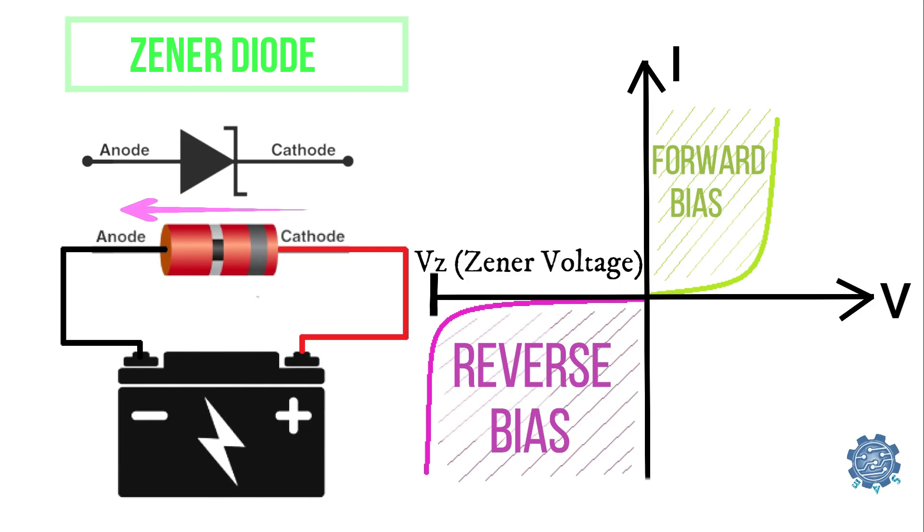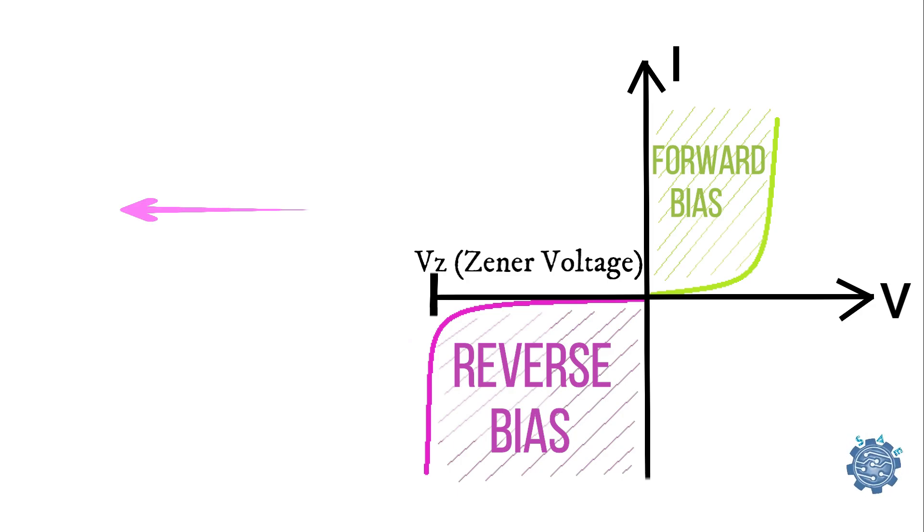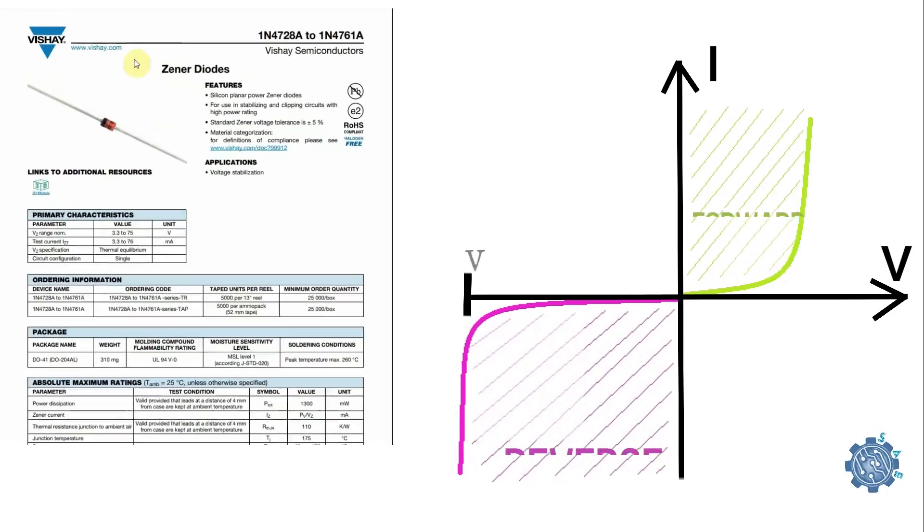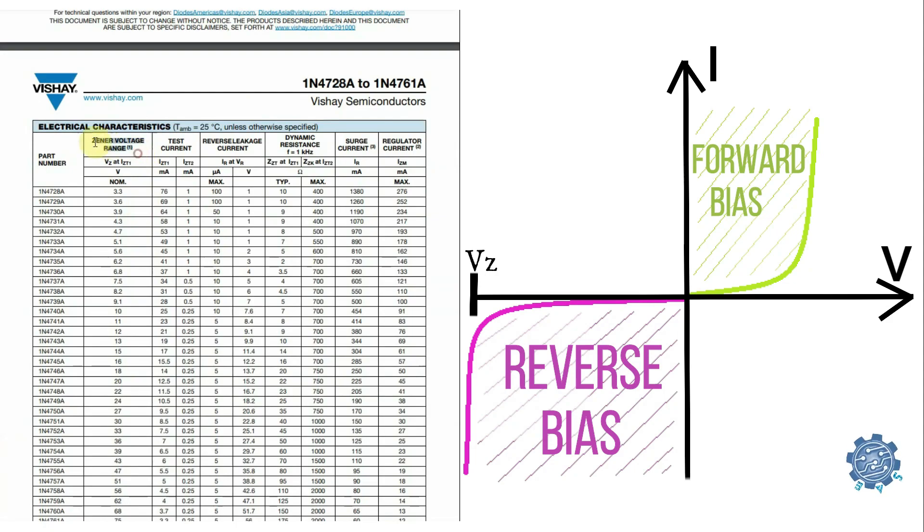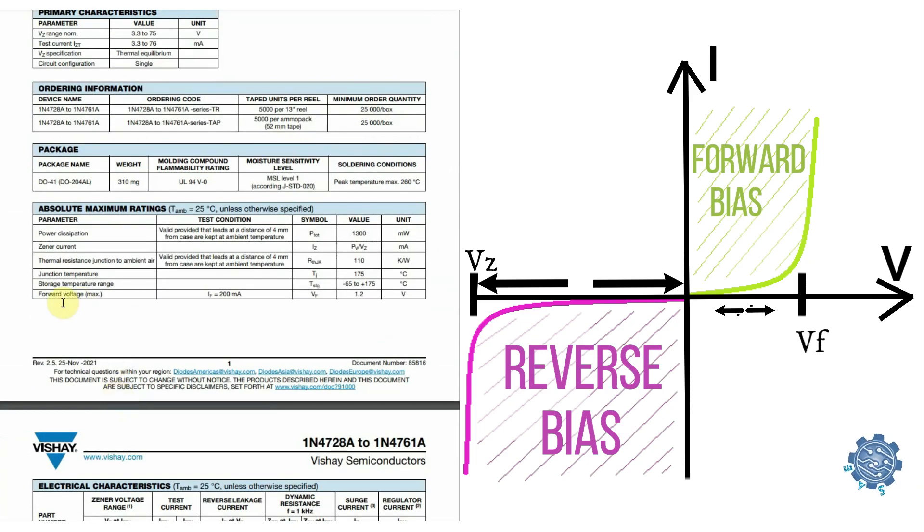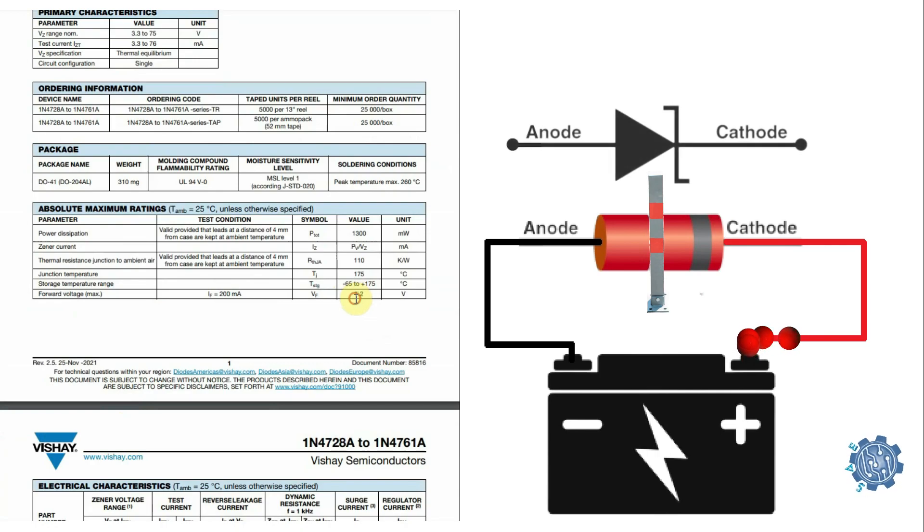The voltage at which a Zener diode starts letting current flow in reverse direction can be found in the diode's datasheet as the Zener voltage and may differ from a diode to another. We can see in the current voltage characteristics curve that the breakdown voltage or Zener voltage is usually much higher than the forward voltage as it needs a stronger electric field to break the depletion region barrier.